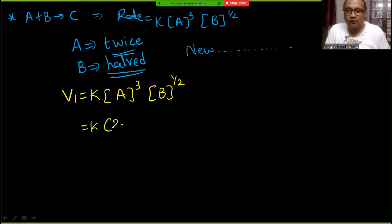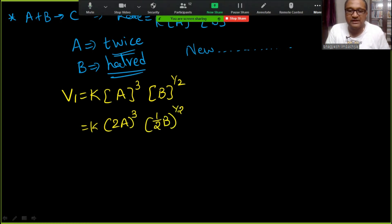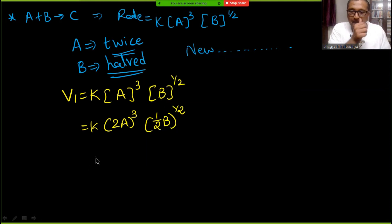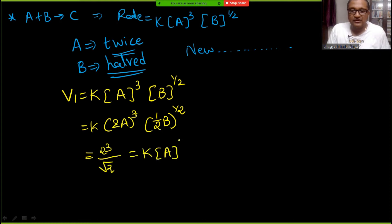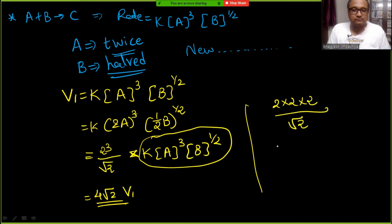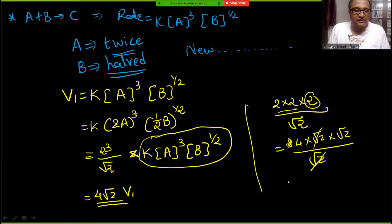New rate V2 = K × (2A)³ × (B/2)^(1/2). This gives 2³ divided by √2 times K × A³ × B^(1/2). Calculating: 2³ = 8, and 8/√2 = 8/(√2) = 4√2. So V2 = 4√2 × V1.